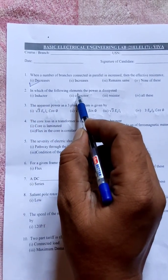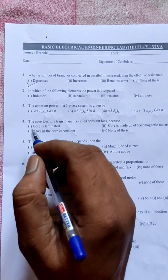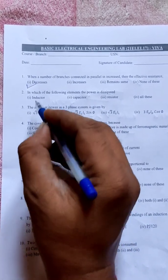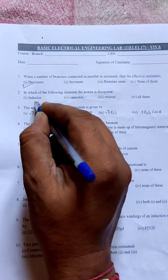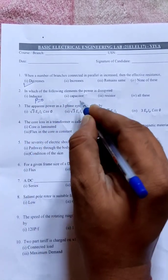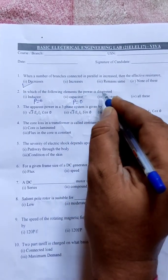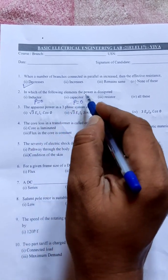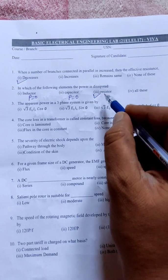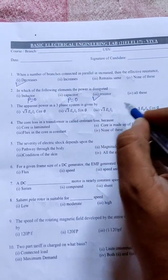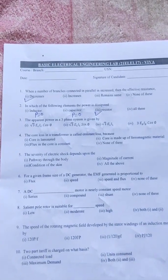Next, in which of the following elements the power is dissipated? Inductor? No, inductor is not power consuming device, it is an energy storing element. Power in inductor is zero. Capacitor? No, capacitor is also energy storing element. Power in capacitor also zero. Which of the following element the power is dissipated? Resistor. Only in resistor power is going to be dissipated, not all of this. Inductor, capacitor never consumes power. So resistor is the correct option.